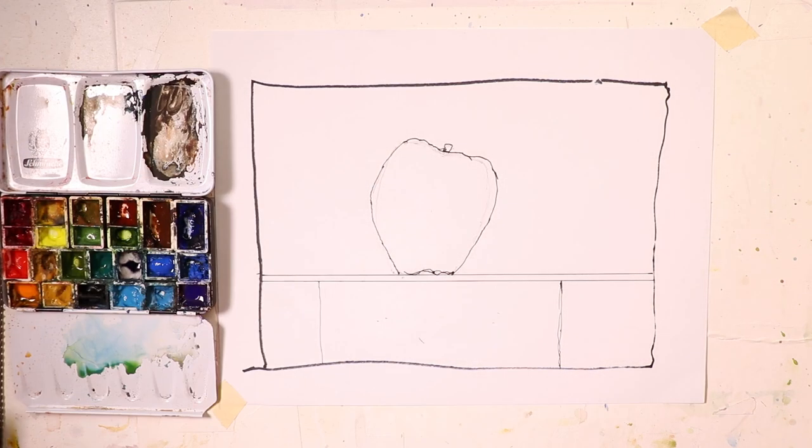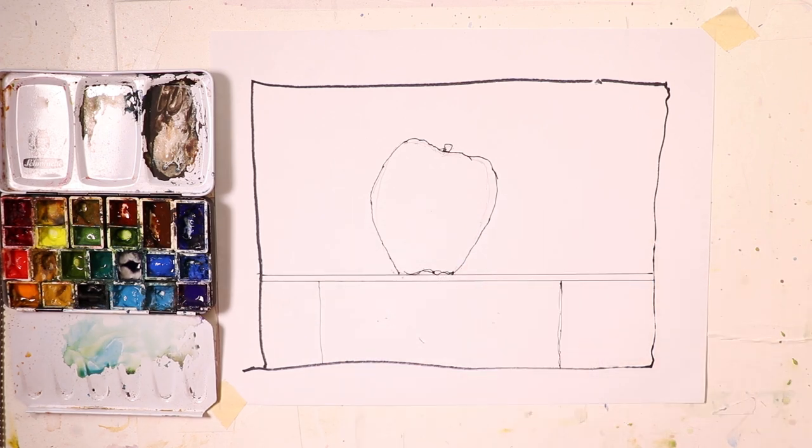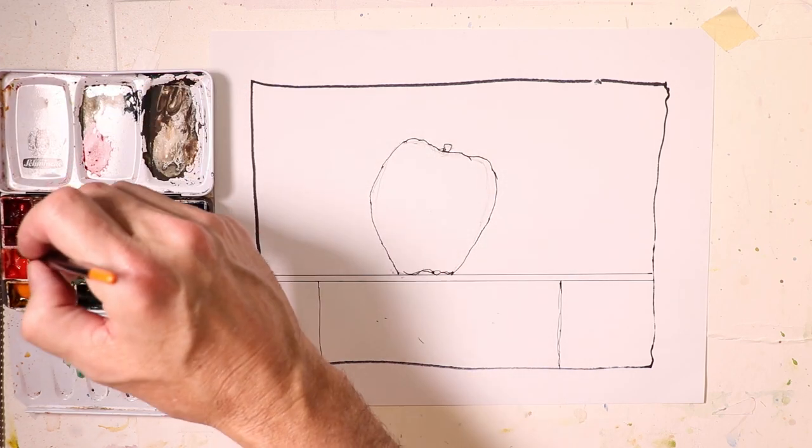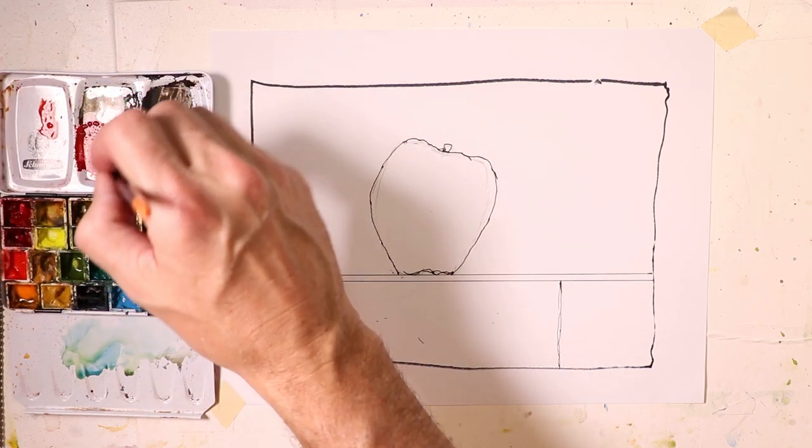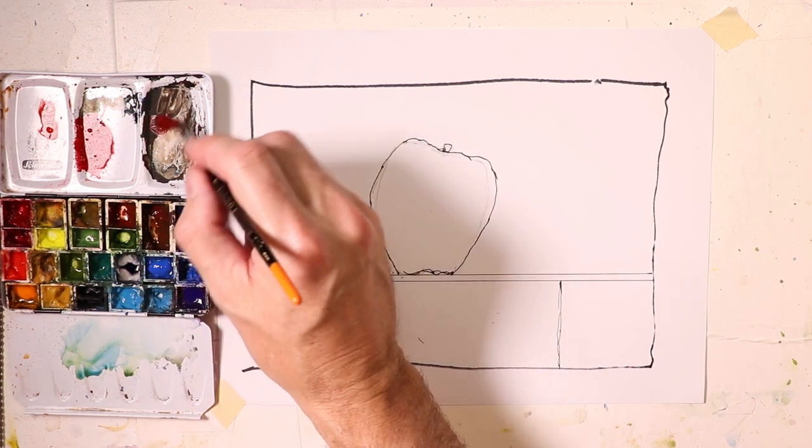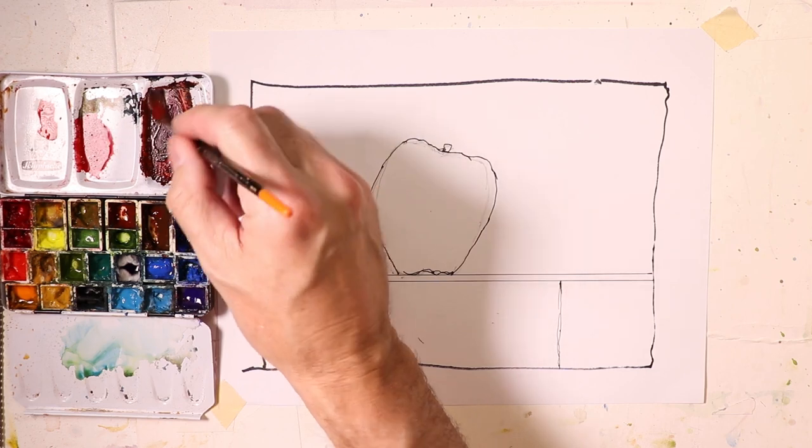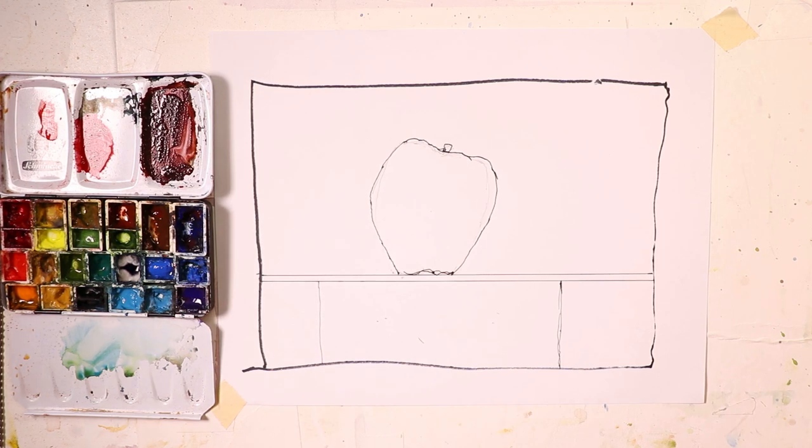I'm going to get myself a nice brush here. I'll use my Raphael watercolor brush. That's a number six. And let's get our colors. We're going to use alizarin crimson, cadmium red, alizarin crimson. And maybe we'll use some of this darker dark over here with a little bit of cobalt blue, maybe some purple, French ultramarine blue. We'll make like a dark like that. Okay. Now let's have some fun.